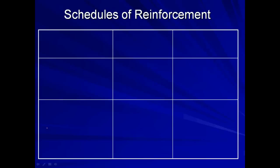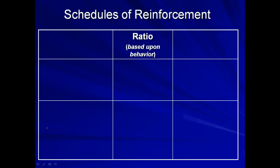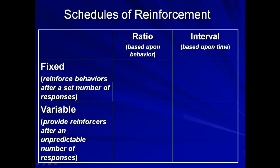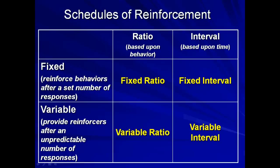I created a graphic: ratio is based on behavior, interval is based on time. Fixed means reinforcing behaviors after a set number of responses, and variable means providing reinforcement after an unpredictable number of responses. So you've got fixed ratio, fixed interval, variable ratio, and variable interval. When you apply these to real life is where it gets challenging — and you will have at least one question on the AP psych exam in the multiple choice about schedules of reinforcement.